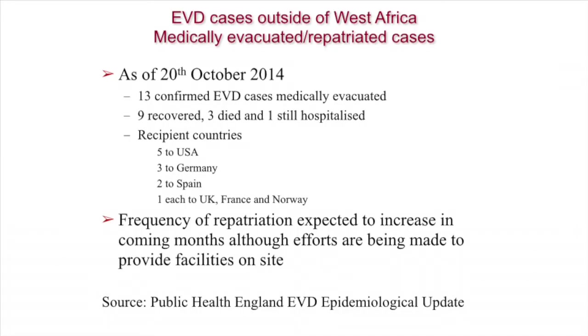Looking at cases outside of West Africa, as of the 20th of October we had 13 confirmed Ebola cases that were medically evacuated. Nine of these have recovered, three have died, and one is still hospitalised. These cases went mainly to the US — five to the US, three to Germany, two to Spain, and one each to the UK, France, and Norway. For Europe, one of the major risks is the repatriation of healthcare workers. If repatriation occurs here, it will be done in a controlled fashion, likely through the company Phoenix Air, which has a European Commission tender for repatriation of European cases. Plans are in place for how people arrive at the airport and are transported to the National Isolation Unit.